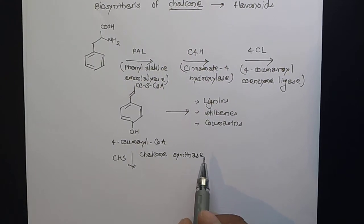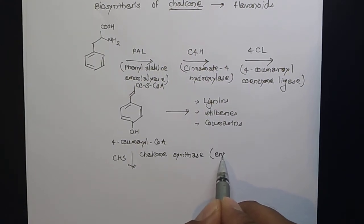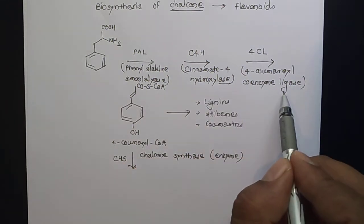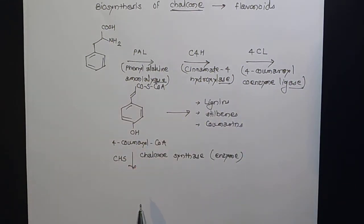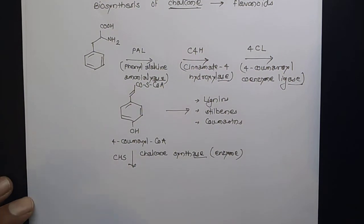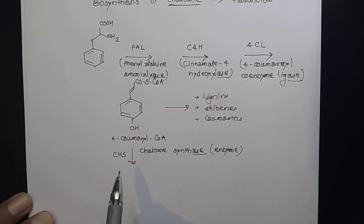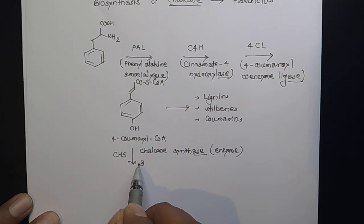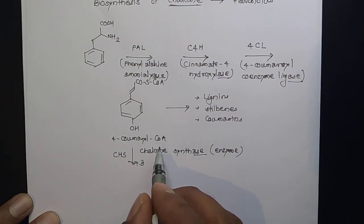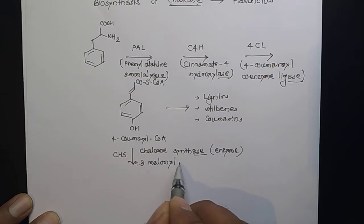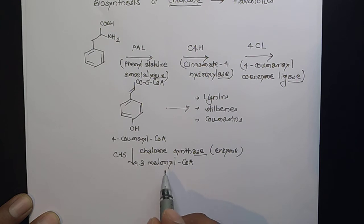If EC number is there, then you say this is an enzyme. In many cases you will find AAC — this AAC ligase and synthase are active enzymes, so please keep that in mind. Then, from 4-coumaroyl CoA, which means coenzyme A derivative, you proceed to the next step.